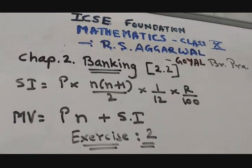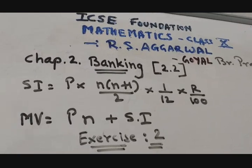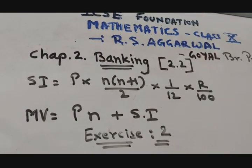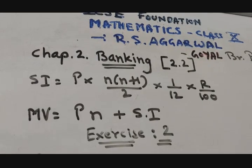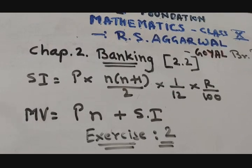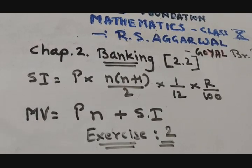Hello viewers, welcome to another episode of Banking, episode 2.2. We have already studied Example 1, where we are going to use the formula: SI equals P times n times (n+1) divided by 2, multiplied by 1/12, multiplied by R/100.